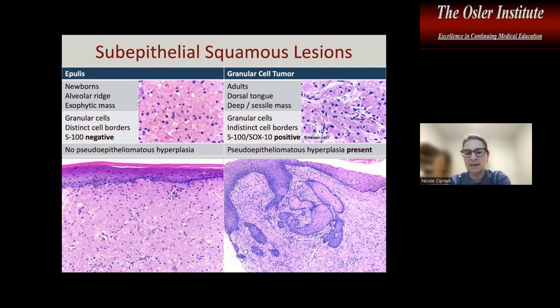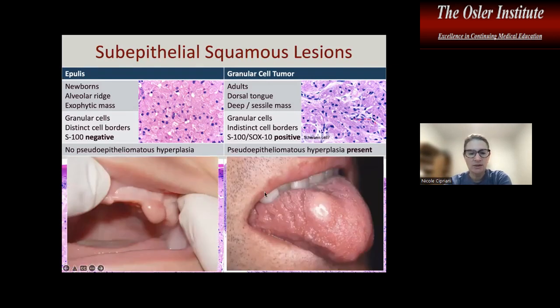If you ever see anything on biopsy that looks like a potential granular cell tumor in the stroma, be very cautious and refrain from a diagnosis of carcinoma. Pseudoepitheliomatous hyperplasia may appear carcinoma-like, but on top of a granular cell tumor should not be considered malignant. Clinically, they may appear more pedunculated versus sessile.